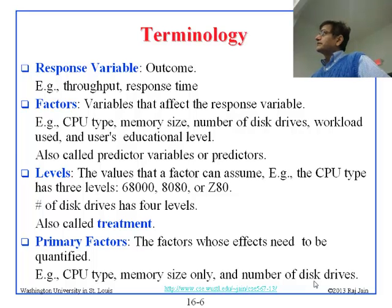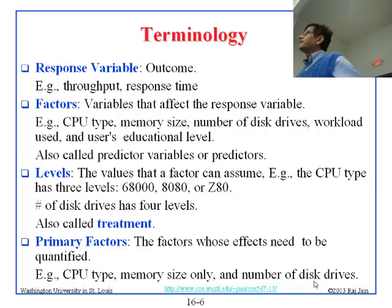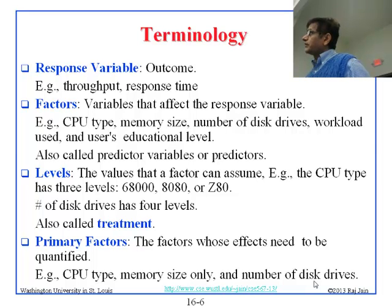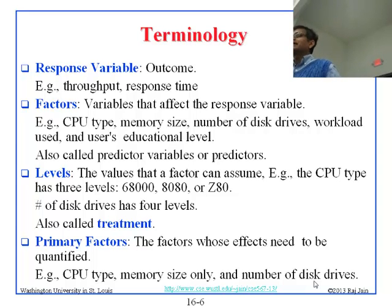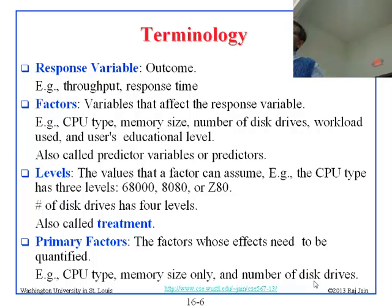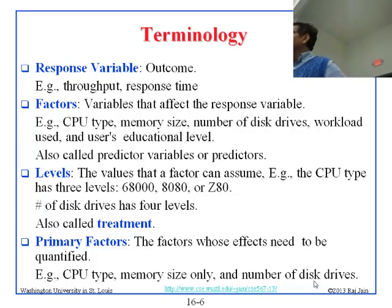Here are the key words. Response variable is the Y variable, the outcome — which could be throughput, response time, or whatever we are measuring. Factors are basically the X variables: CPU type, memory size — these are all the factors. Levels are the different values each factor takes. I chose the word 'level' rather than 'treatment' because it is more computer science oriented. In most books on experimental design, they use the word 'treatment,' which is appropriate for medical and agricultural applications, but in computer science we use the word 'level.'